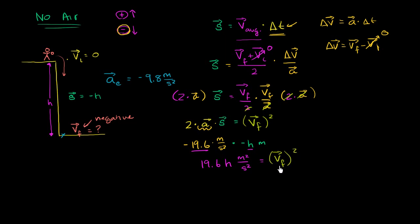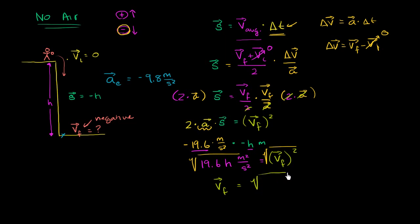Notice that when you square something, you lose the sign information — whether the velocity is positive or negative, squaring it gives a positive value. But in this example we're moving downwards, so we want the negative version. To find our final velocity, we take the negative square root of both sides. So final velocity equals the negative square root of 19.6h, and taking the square root of meters squared per second squared gives us meters per second.